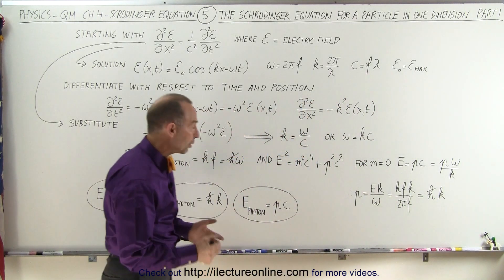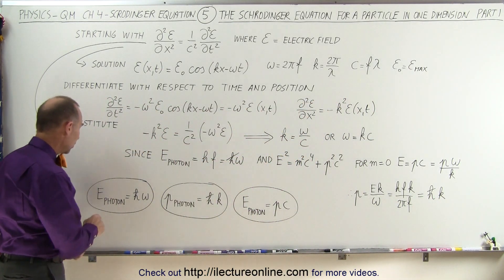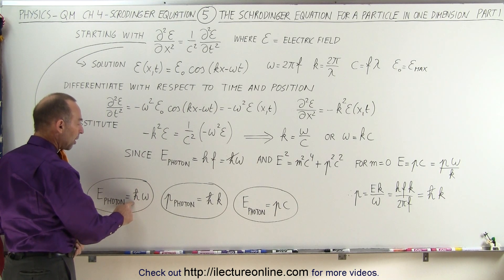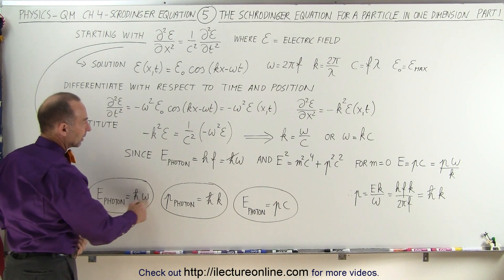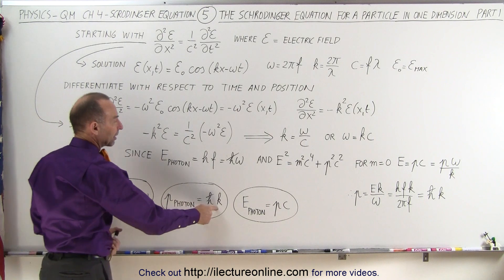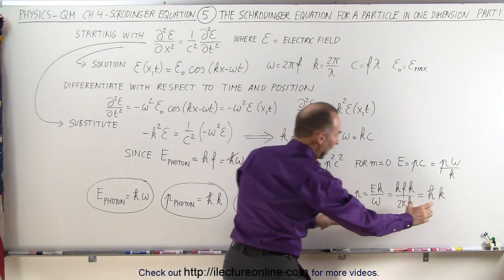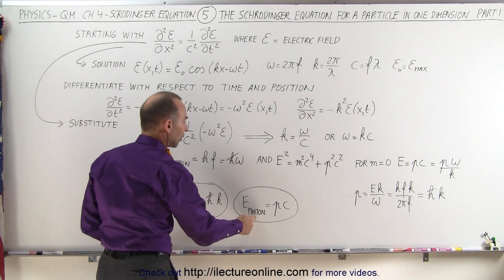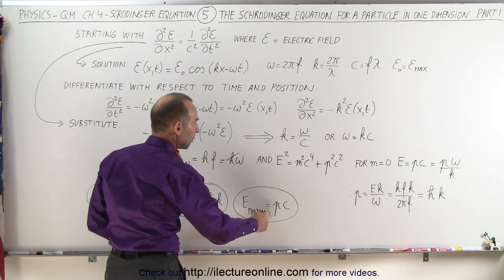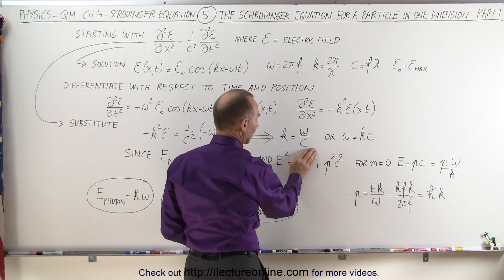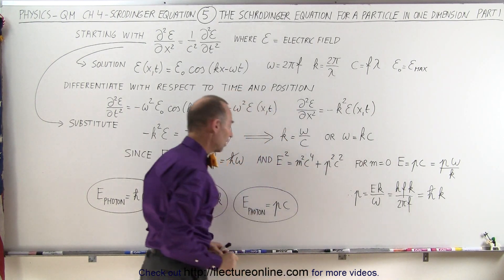So now we have three equations we can derive from all that. First, the energy of the photon is h times frequency, or ℏ times the angular frequency. Second, the momentum of a photon is ℏ times k. And finally, the energy of a photon can also be expressed as momentum times c — since a photon has no mass, energy simply equals p times c.